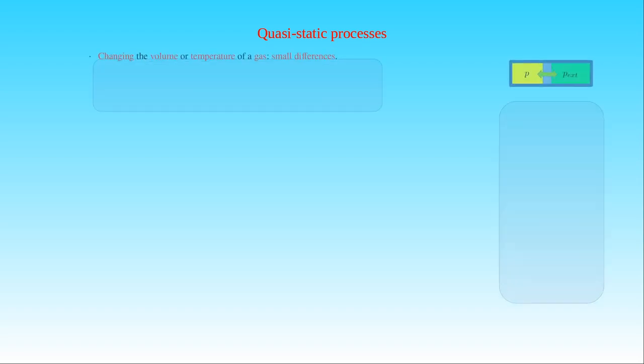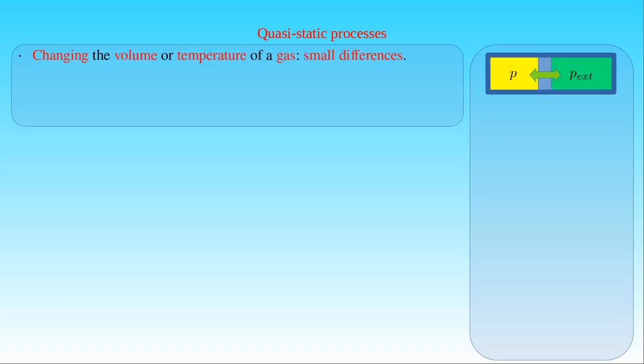When we discuss the work done during the contraction or the expansion of a gas, we implicitly assume that the external pressure exerted on the moving wall in the cylinder is greater or smaller than the pressure of the gas in the system, but this difference is infinitesimally small. This infinitesimal difference is enough to move the wall by the net force of the unbalanced pressure forces acting on its both sides.